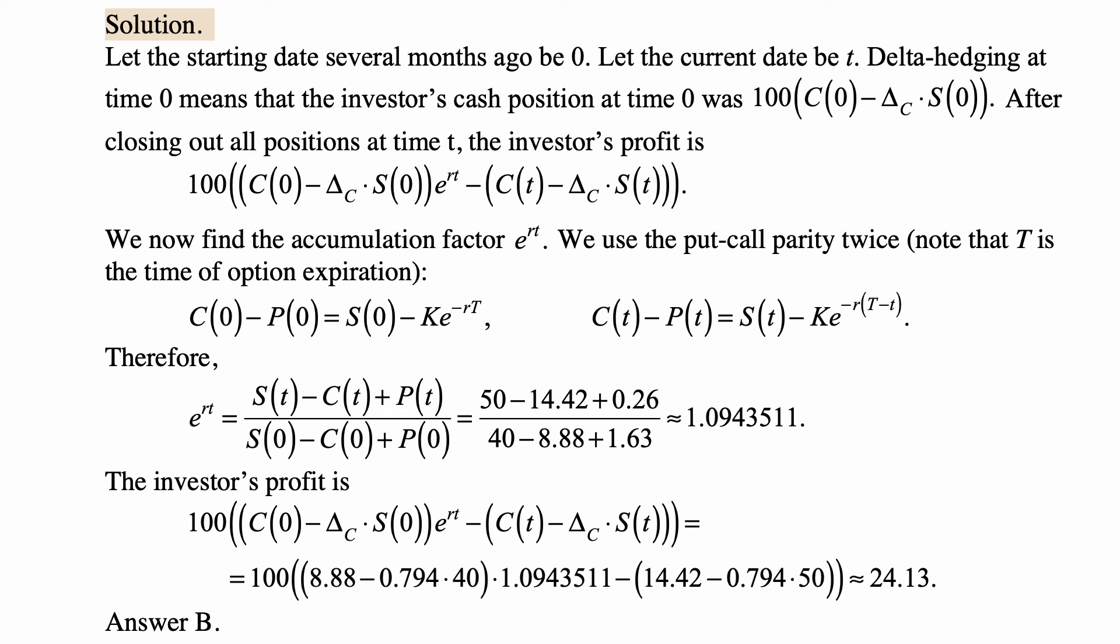If we write the same type of expression S(0) - C(0) + P(0), then from the first put-call parity, that's actually equal to K*e^(-rT).